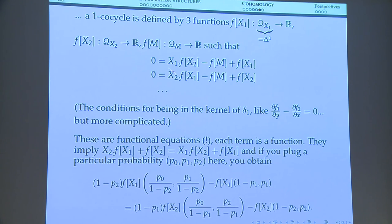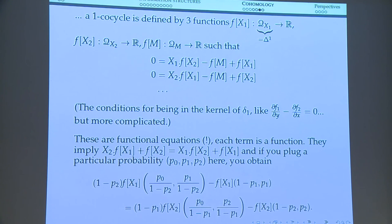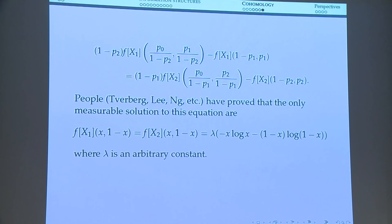Some people — especially in Hungary — have been solving functional equations for thirty years, and they know sets of solutions. They already know that the solutions to the functional equation we found are multiples of the entropy. The simple example here concentrates entropy on two elements, but you can do it in general if you are patient enough.